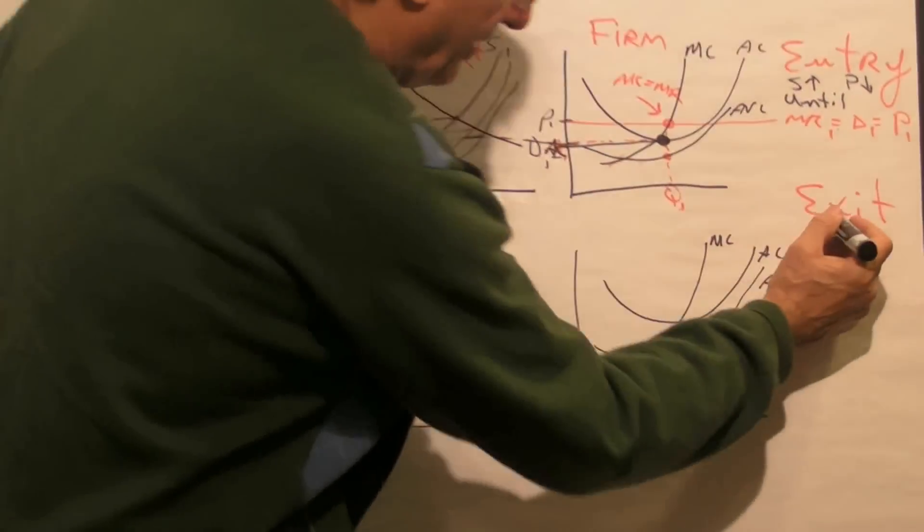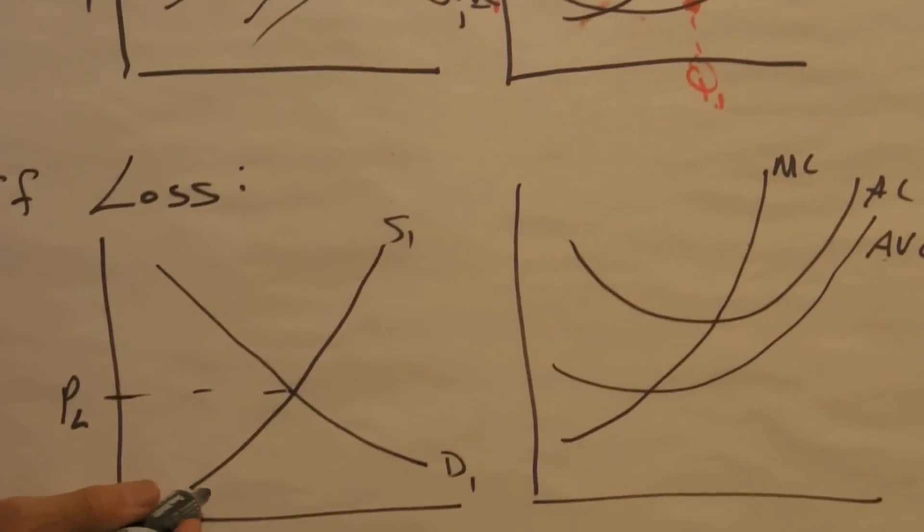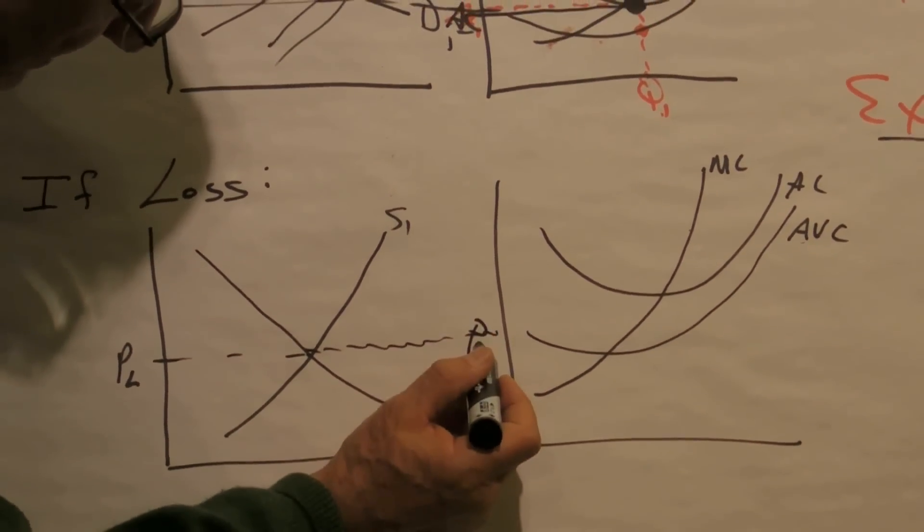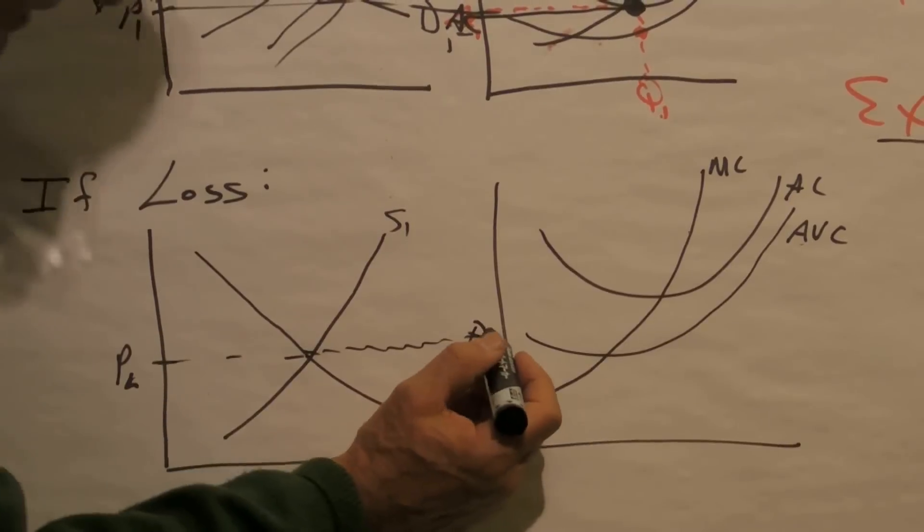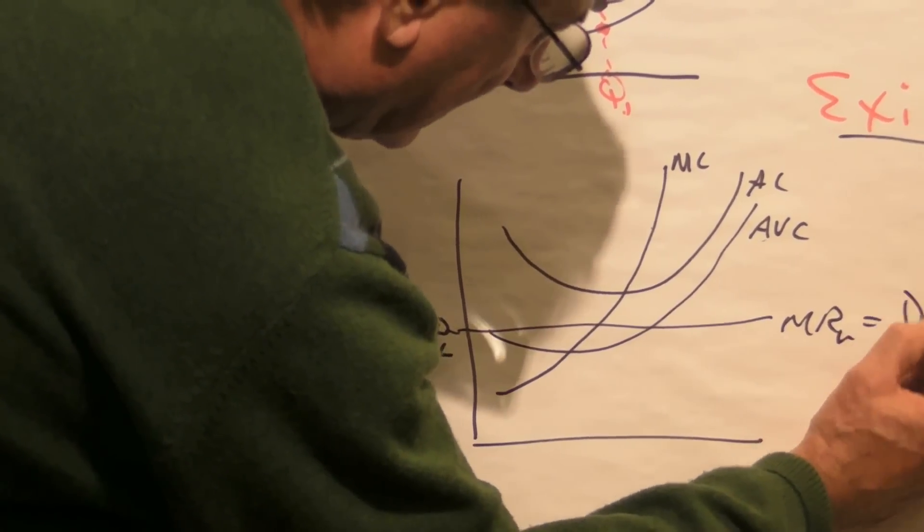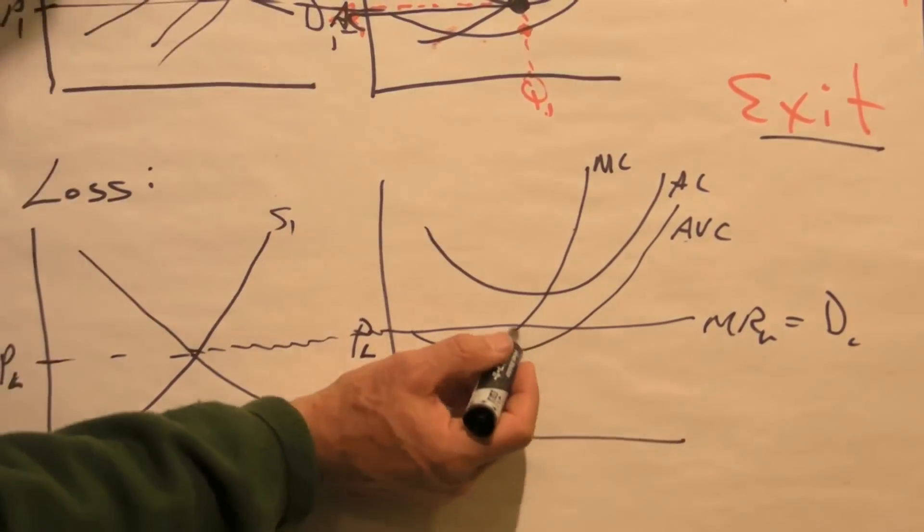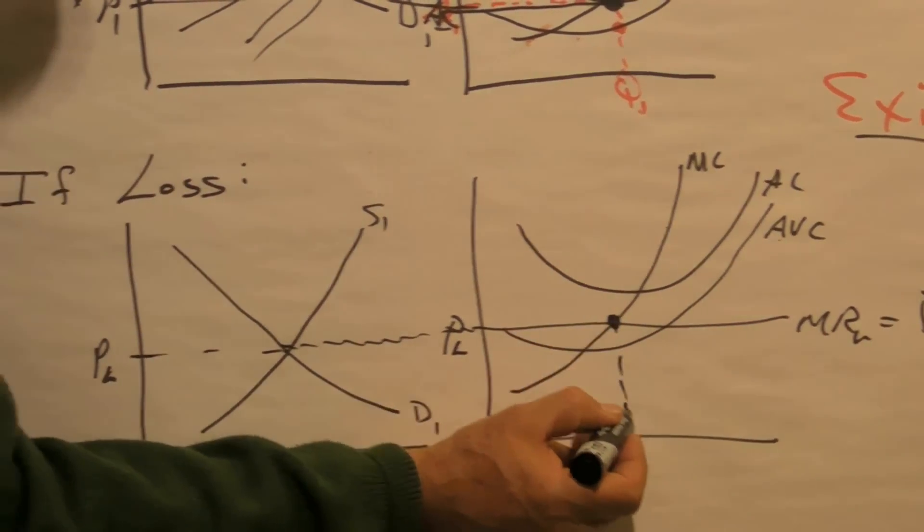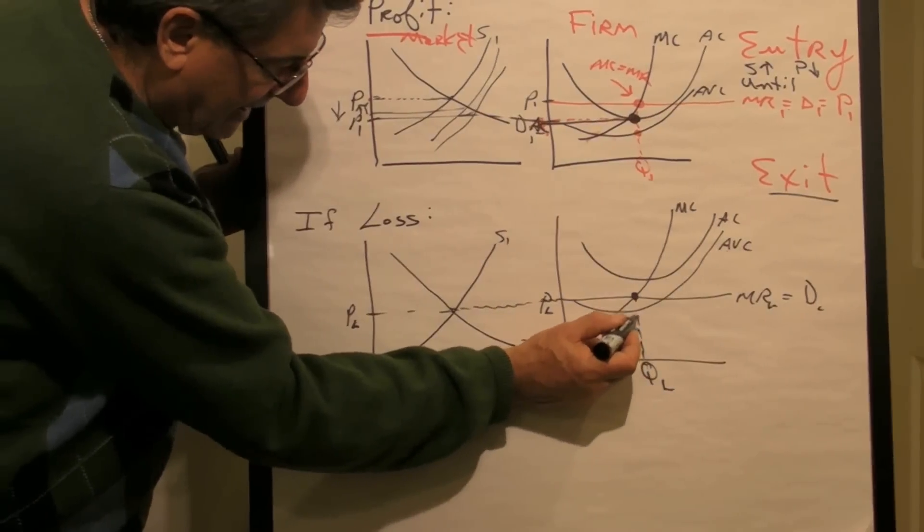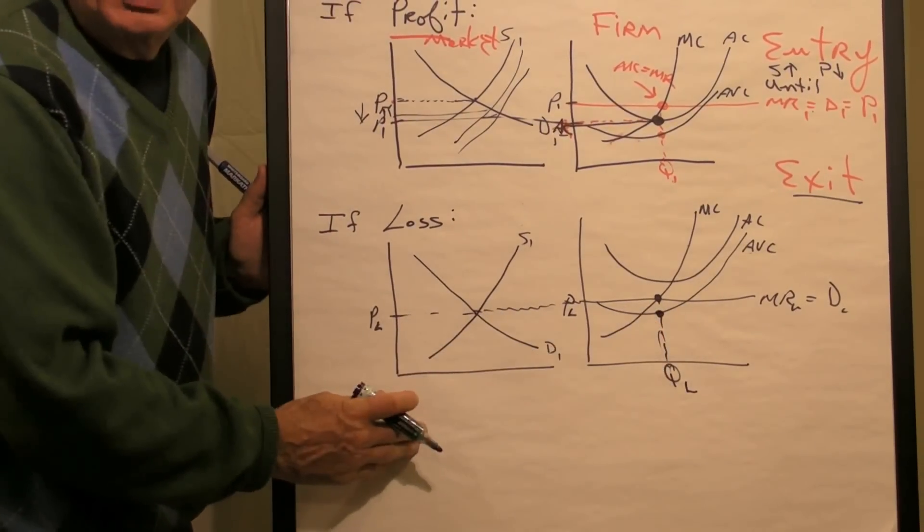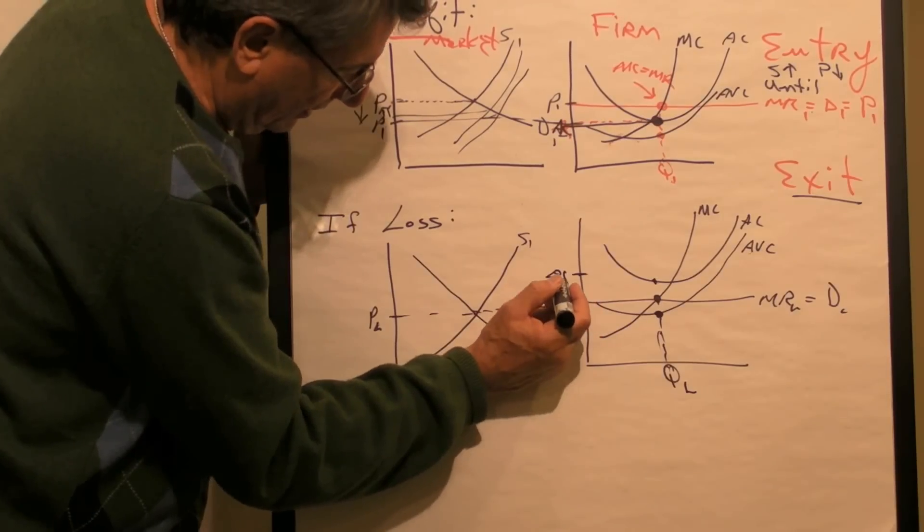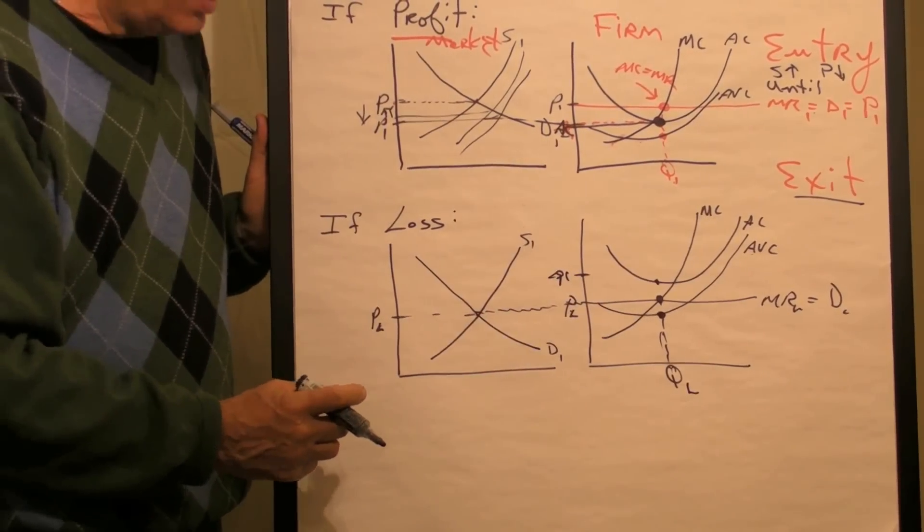What if there is loss? Well, there will be exit. So this is a picture of loss here. If the price is P sub L here for loss, then this becomes the marginal revenue, Q sub L. It's the demand curve sub L. And this is the quantity this firm would produce, Q sub L. And as we go back up, they cover all their variable costs, but their average cost is greater than the price that they are going to receive. So that's a loss.